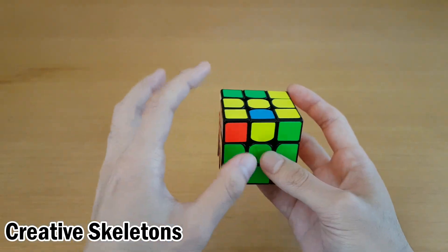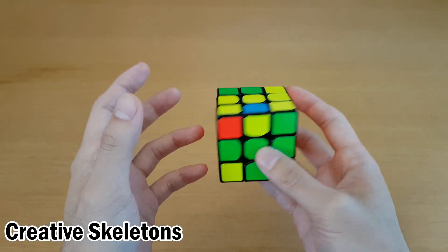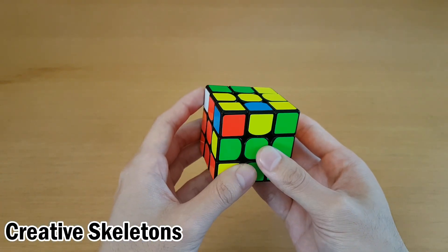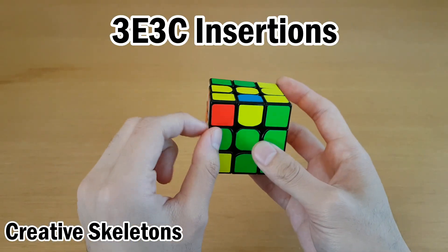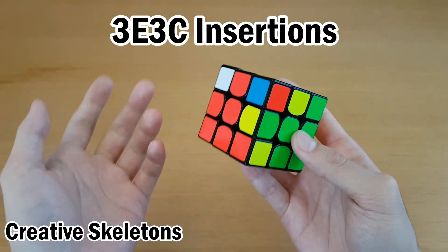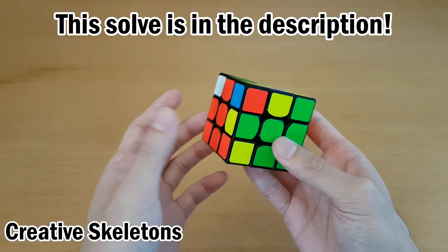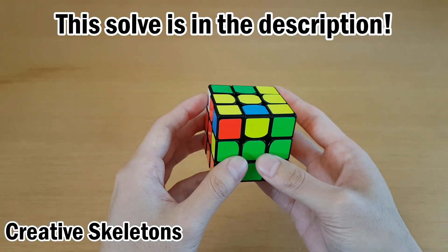And in fewest moves, usually the thing you end up going with is not something you planned for, because there are so many possibilities you can't really plan for something and have it work out the best every time. So with this solve, I just stickered up the edges, stickered up the corners, and went through and inserted three corners and three edges, both of them being commutators. And what ended up happening was I got a 25 move solution.